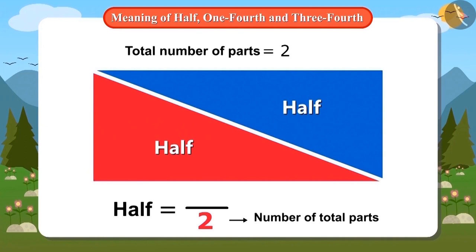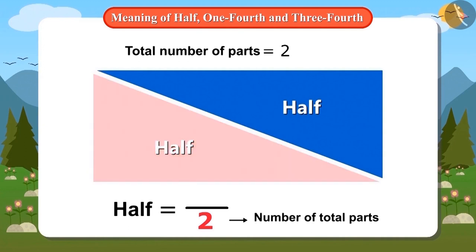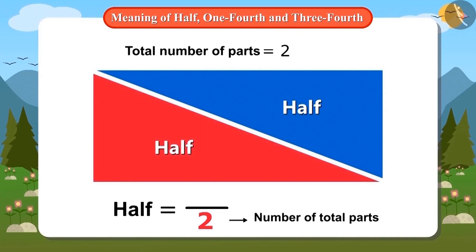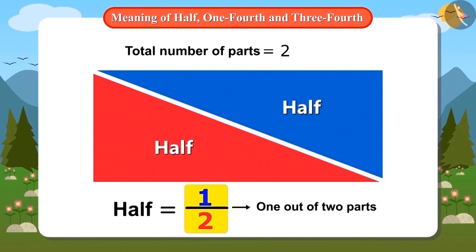Now tell me, how many of these two parts will be called half? Madam, one of these two parts will be called half. Absolutely right. So we will put one above this line. What does it mean? It means one out of two parts. But how do we read it? It is read as one half. That is one out of two parts.